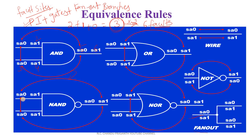For an OR gate, stuck-at-1 at input is equivalent to stuck-at-1 at output. It is just a reverse case. For a NOR gate, stuck-at-1 at input is equivalent to stuck-at-0 at output. Also for a NOR gate, stuck-at-0 at input is equivalent to stuck-at-1 at output, and stuck-at-0 at output is equivalent to stuck-at-1 at input. Just remember these simple rules.